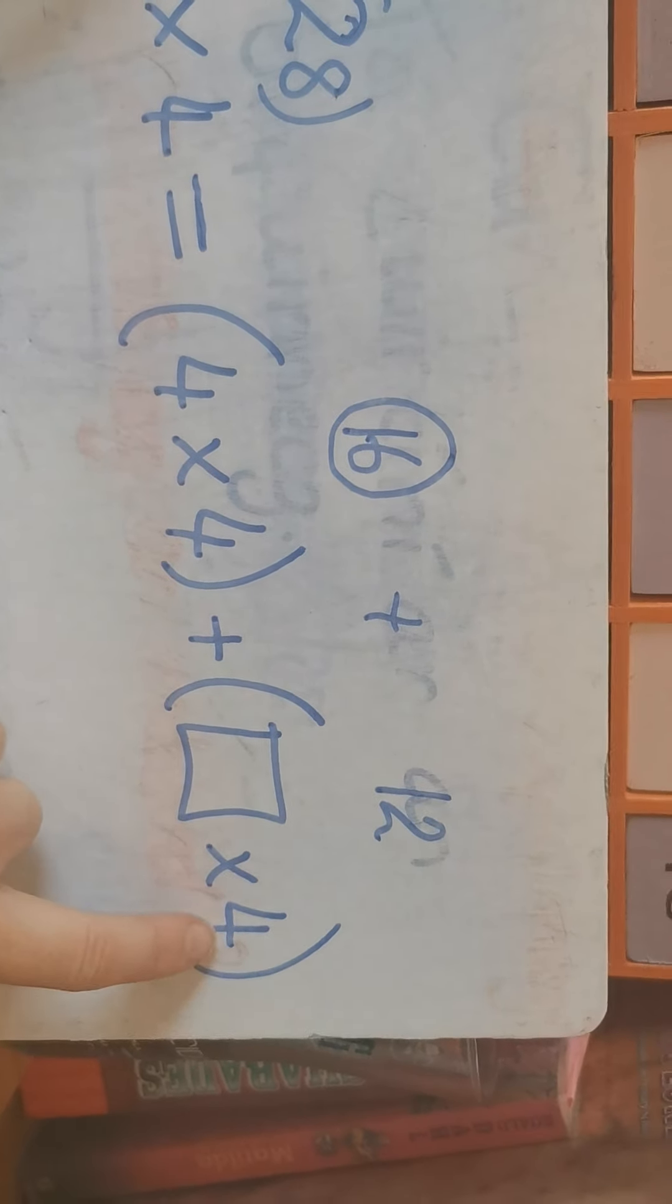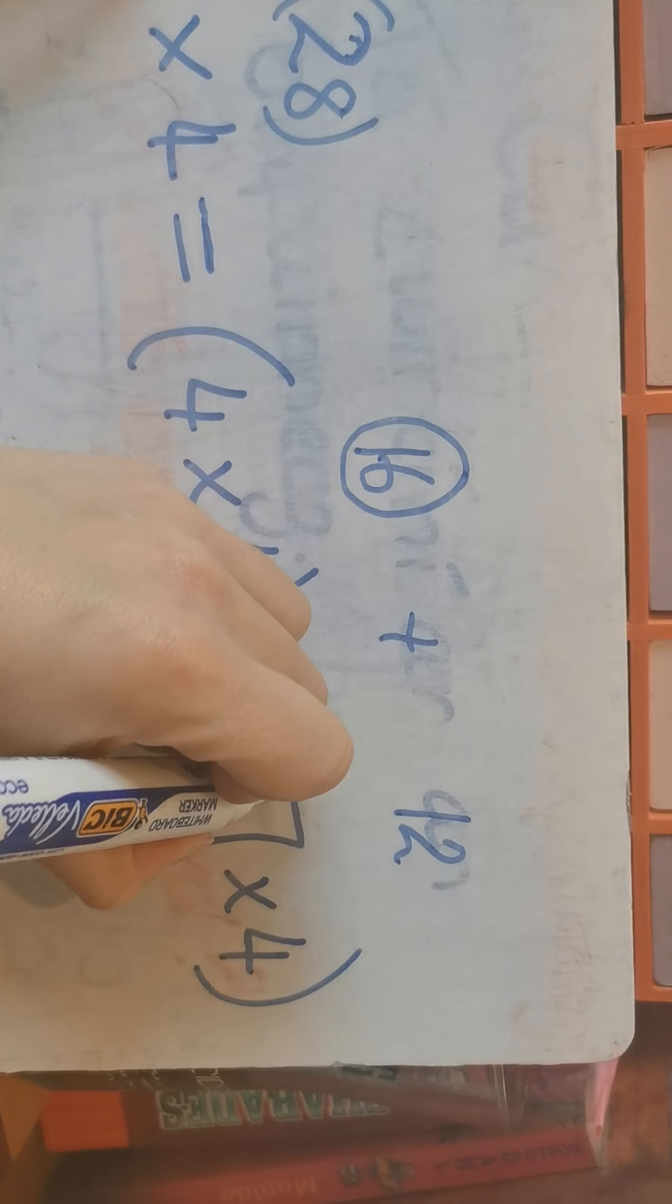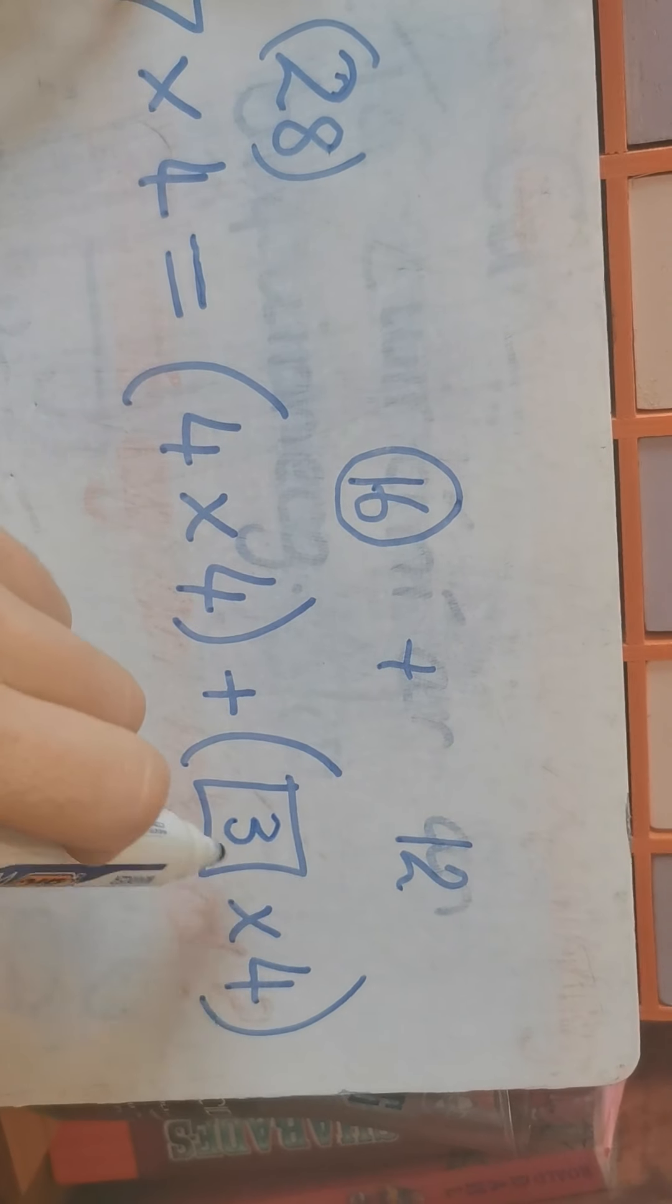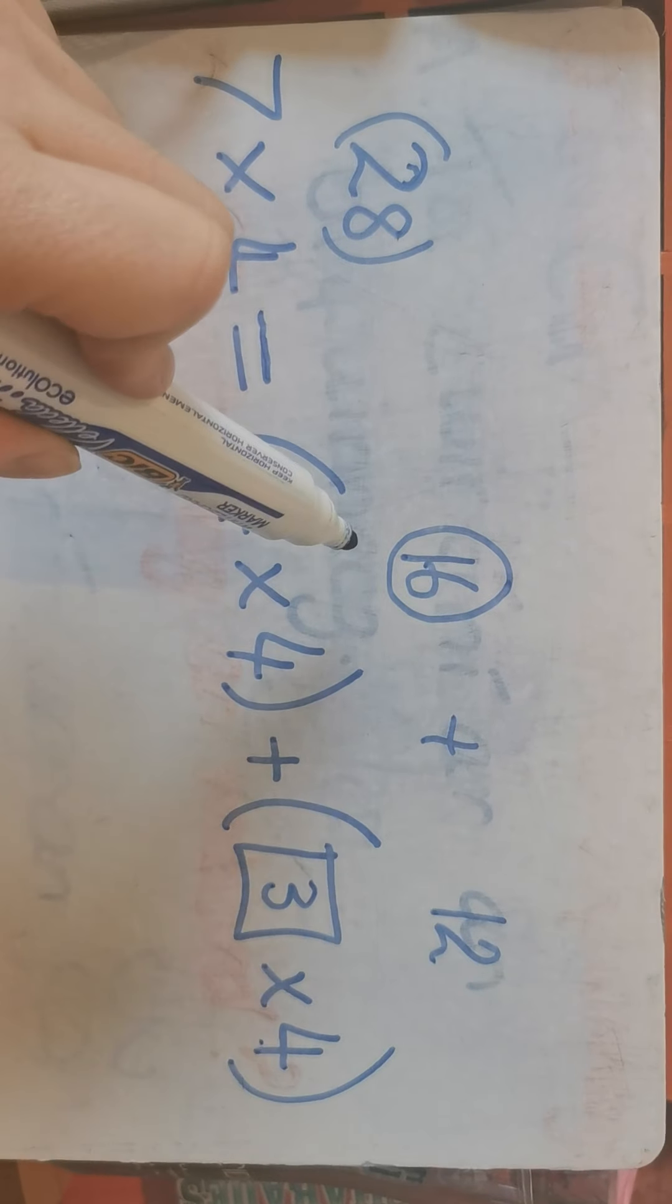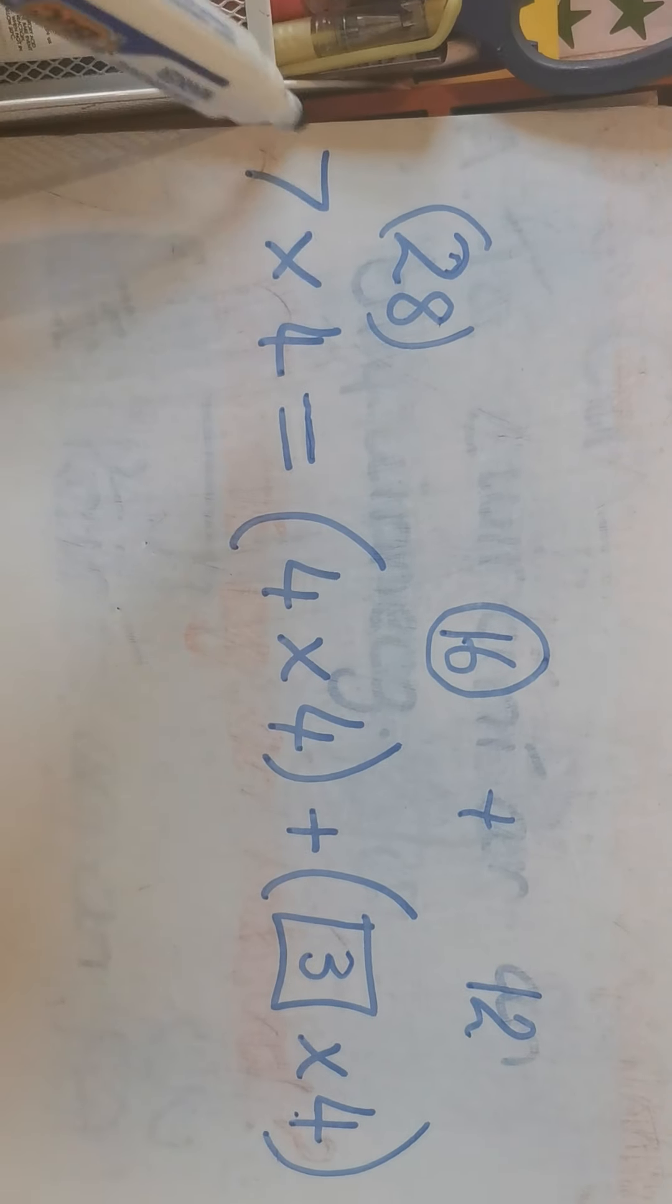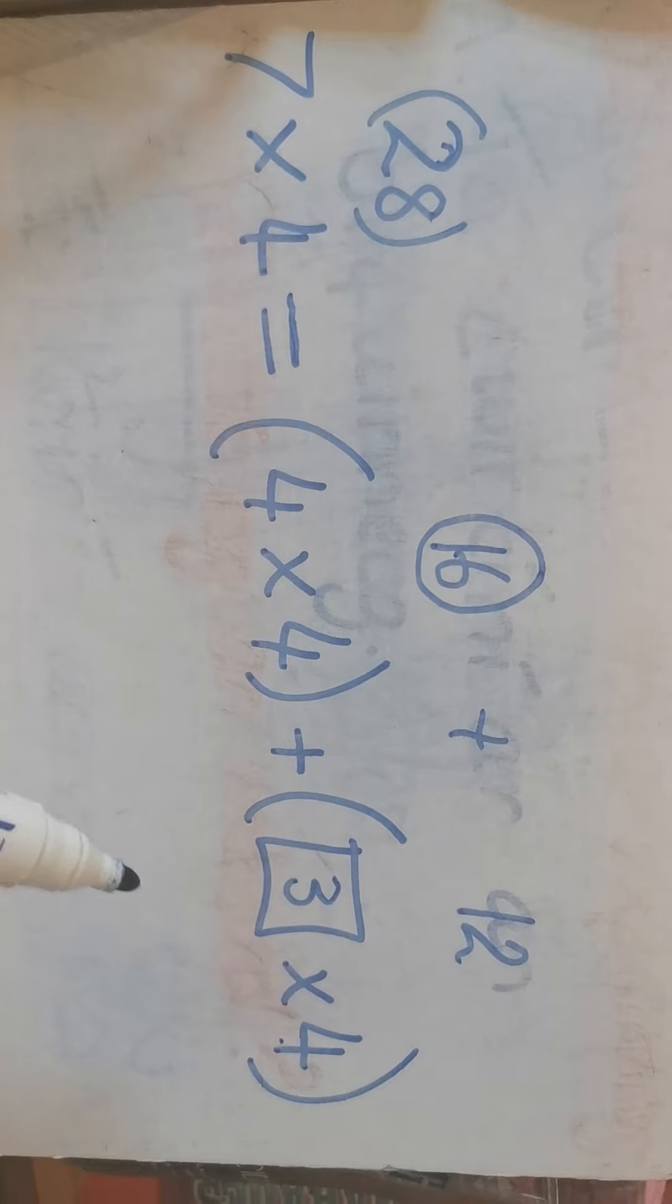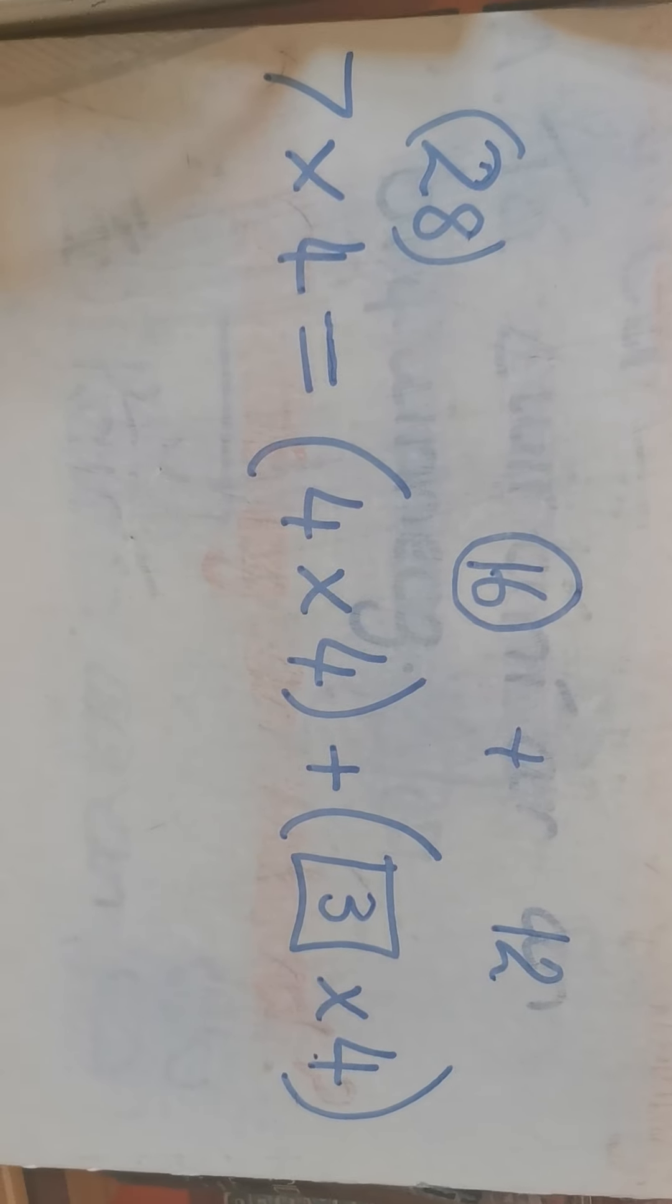So what multiplied by four will give us 12? We can do the opposite. We can divide the four into 12 and it would give us three. Three multiplied by four is 12. Four by four is 16 and 16 plus 12 equals 28. So that means that our number three here is correct.